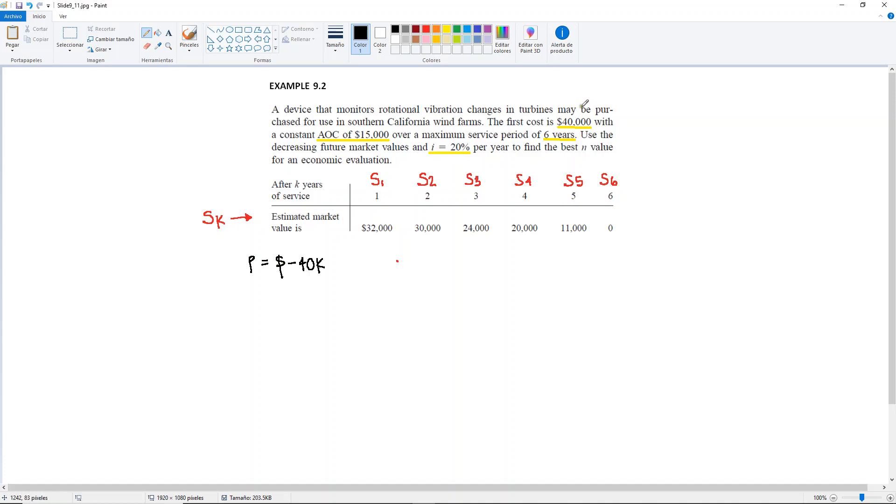Sometimes, this is just to take into consideration for future examples or problems. The P will not be given as a P per se. It won't say that it's a first cost. Sometimes, the P will be given in this table right here, but it will appear in year zero. Because remember that P happens in year zero.